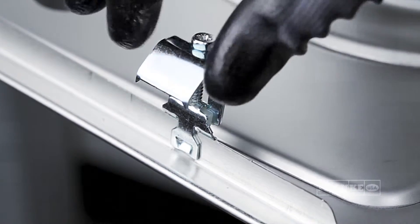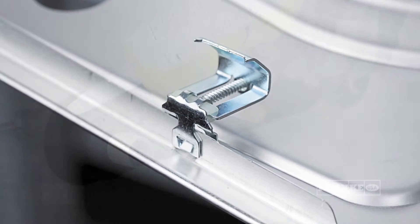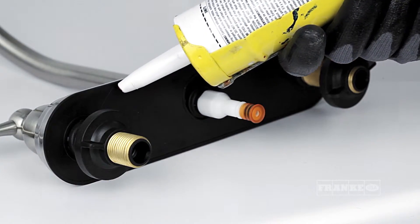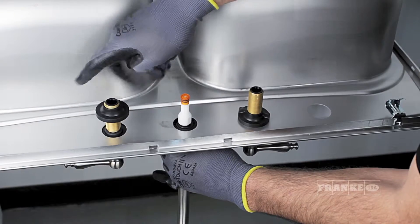Finally, turn all clip jaws parallel to the sink rim. Once the clips are properly attached, connect the faucet and drains to the sink.